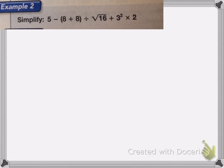So here we have, we want to simplify this problem. So we have five minus eight plus eight divided by the square root of 16 plus three squared times two. I find it easiest to go step by step. So I'm going to look, which one do I do first? I first do the parentheses. So eight plus eight is 16.